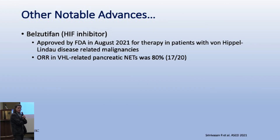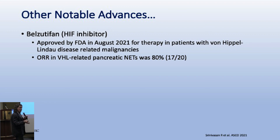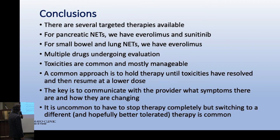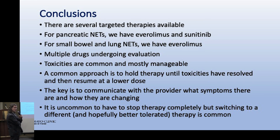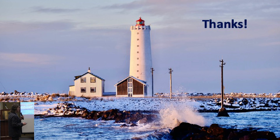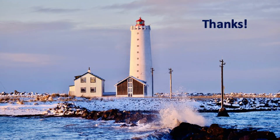A new drug called belzutifan was just approved last year for pancreatic neuroendocrine tumors in patients with von Hippel-Lindau disease, a rare inherited condition - giving an idea of new drugs coming. In conclusion: there are several targeted therapies available. For pancreatic NETs we have everolimus and sunitinib; for small bowel and lung NETs we have everolimus, with multiple drugs being studied. Toxicities are common but mostly manageable - communicate with your treating team if you're having side effects.